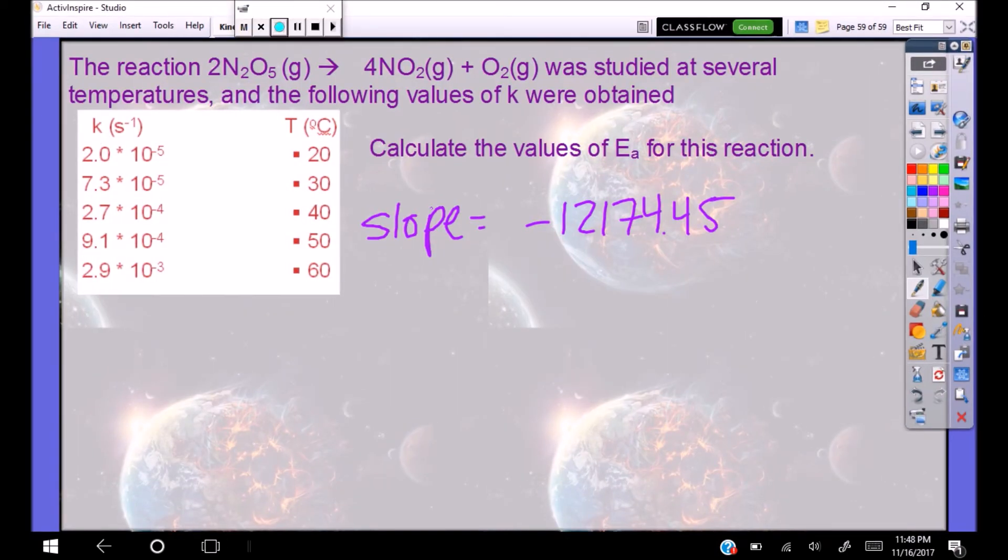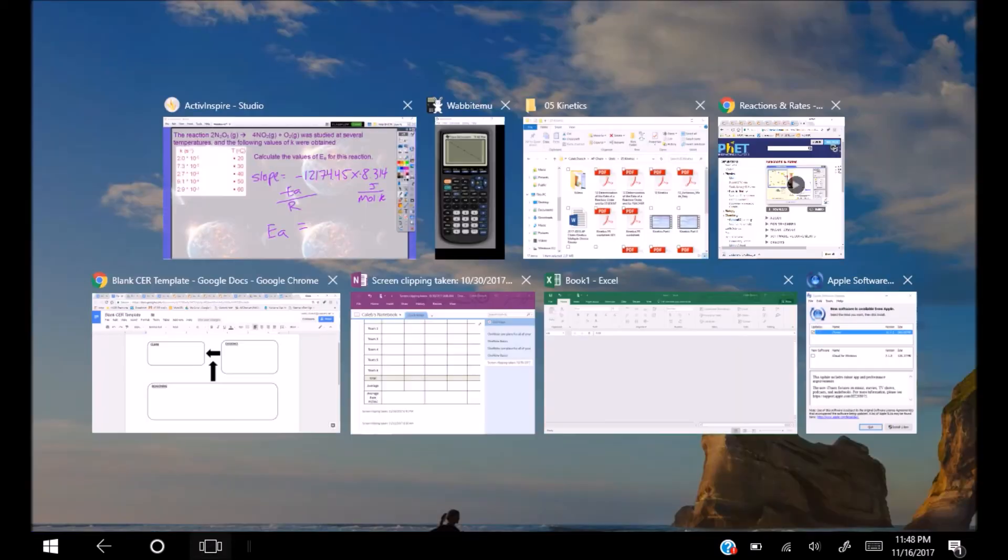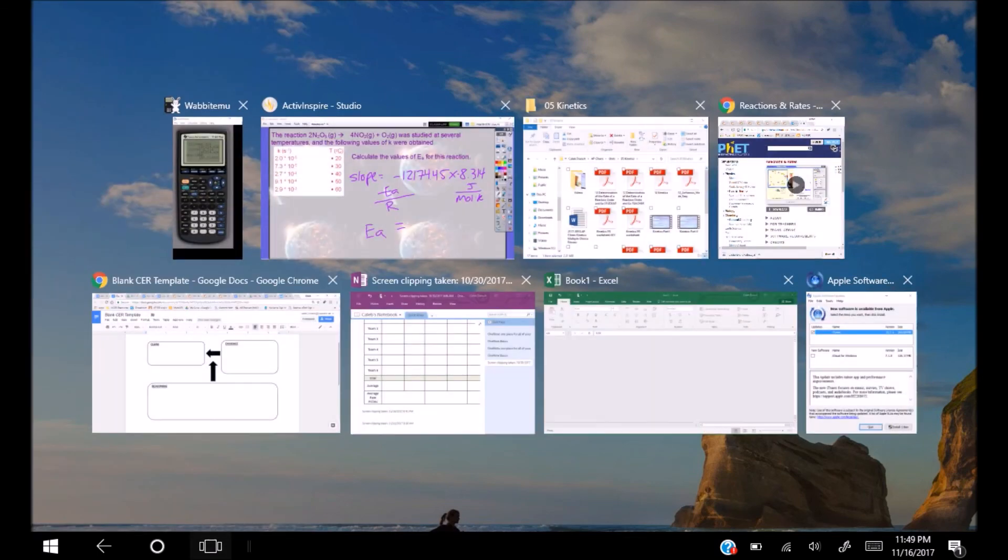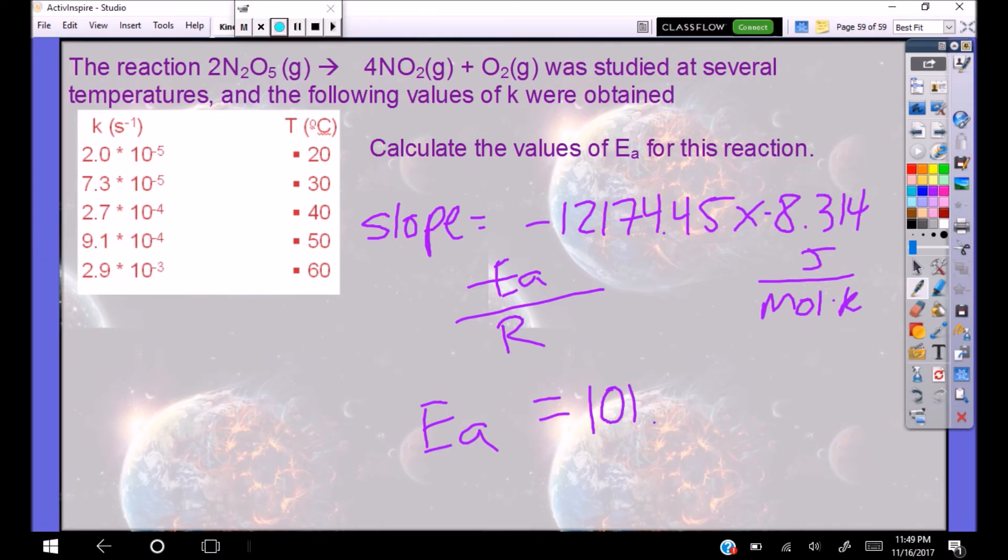So remember that my slope is equal to my activation energy, negative activation energy over R. So if I multiply this by 8.314 joules per mole Kelvin, negative 8.314, I'm sorry, I should get my activation energy. So EA is equal to negative 12174 times 8.314. And I get negative, or sorry, that should have been a negative positive. Let's try that again. 8.314. All right. So I get 101214. Let's put that in kilojoules. I get 101.2 kilojoules. That's my activation energy. 101.2 kilojoules per mole as my activation energy. Not too bad.